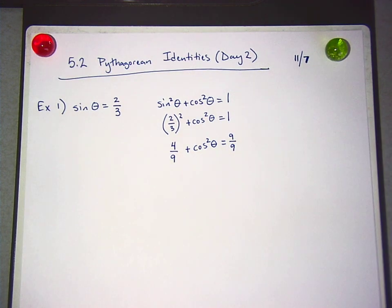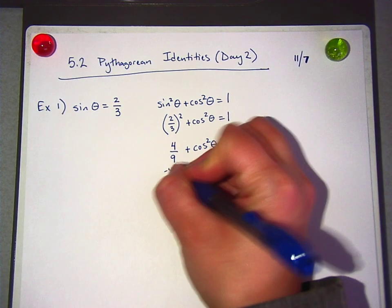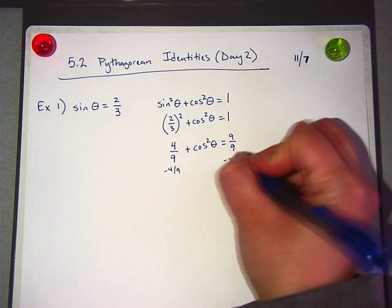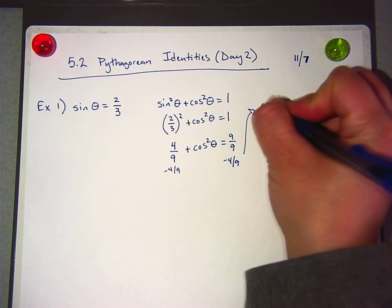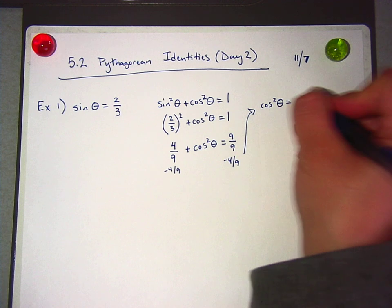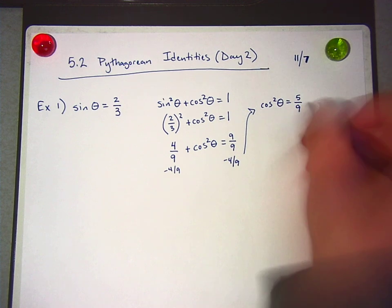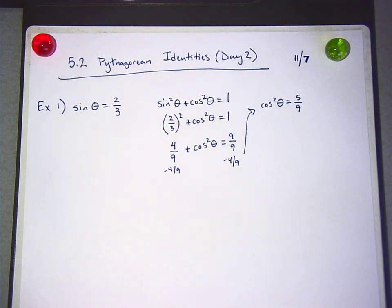I'm going to turn this over. I'm going to write nine-ninths over here. Can you tell me, can you tell why I'm doing that? The same number of ninths. Yeah. I'm anticipating that I'm going to subtract four-ninths from both sides. I'm just getting it ready. And I'm going to subtract four-ninths. Surprise, surprise. Now I have cosine squared theta equals five-ninths. Okay, now what should I do?